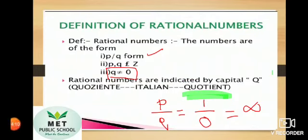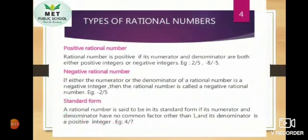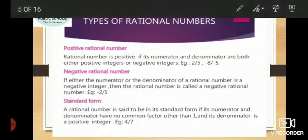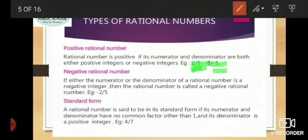Now let us see different types of rational numbers. There are two types: positive rational numbers and negative rational numbers. If the numerator and denominator are both having the same sign — both positive or both negative — then we call it a positive rational number. If either the numerator or denominator has a different sign, then it is said to be a negative rational number.